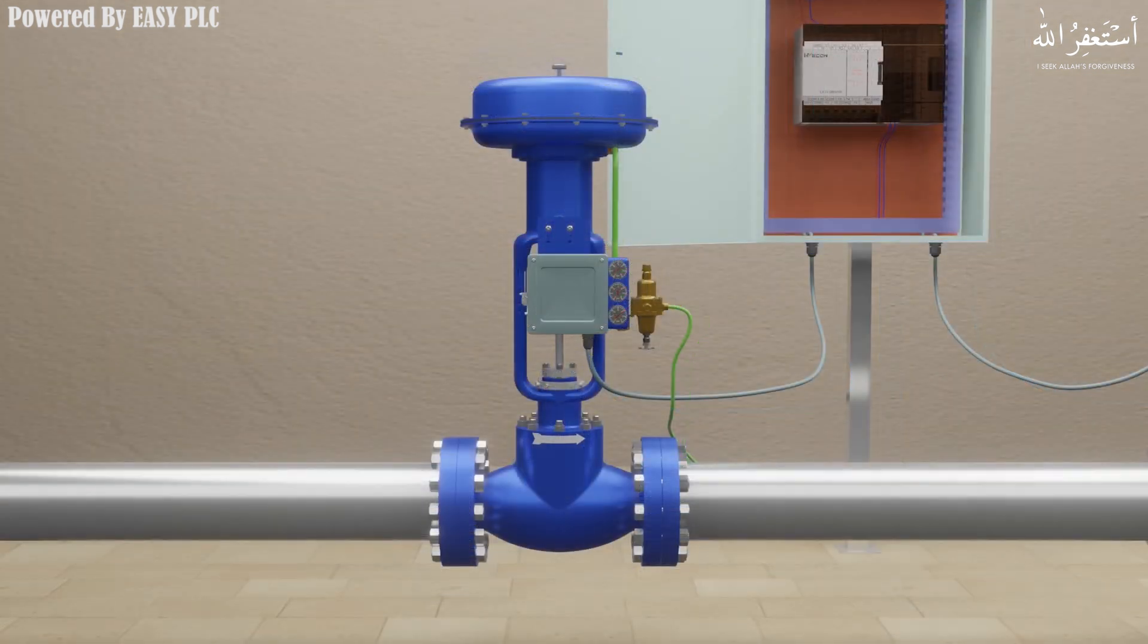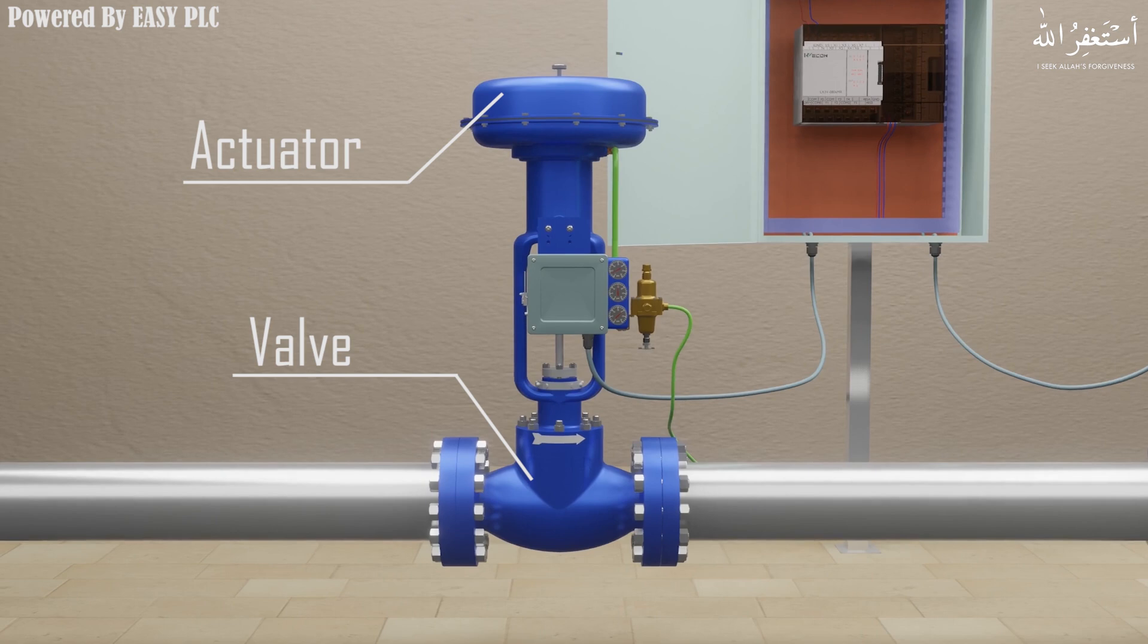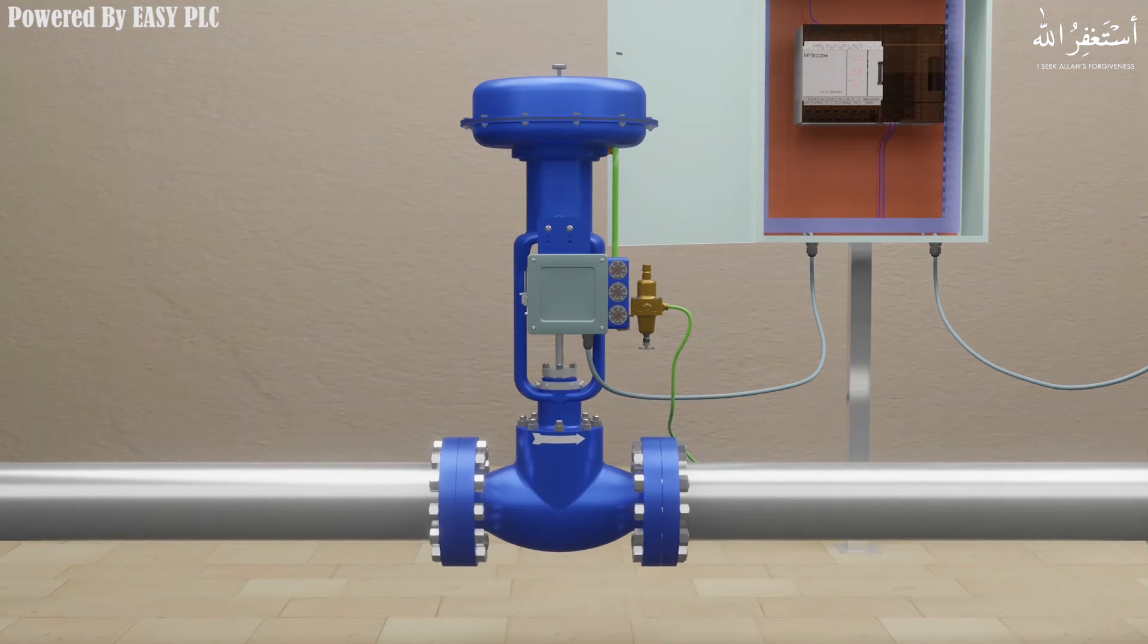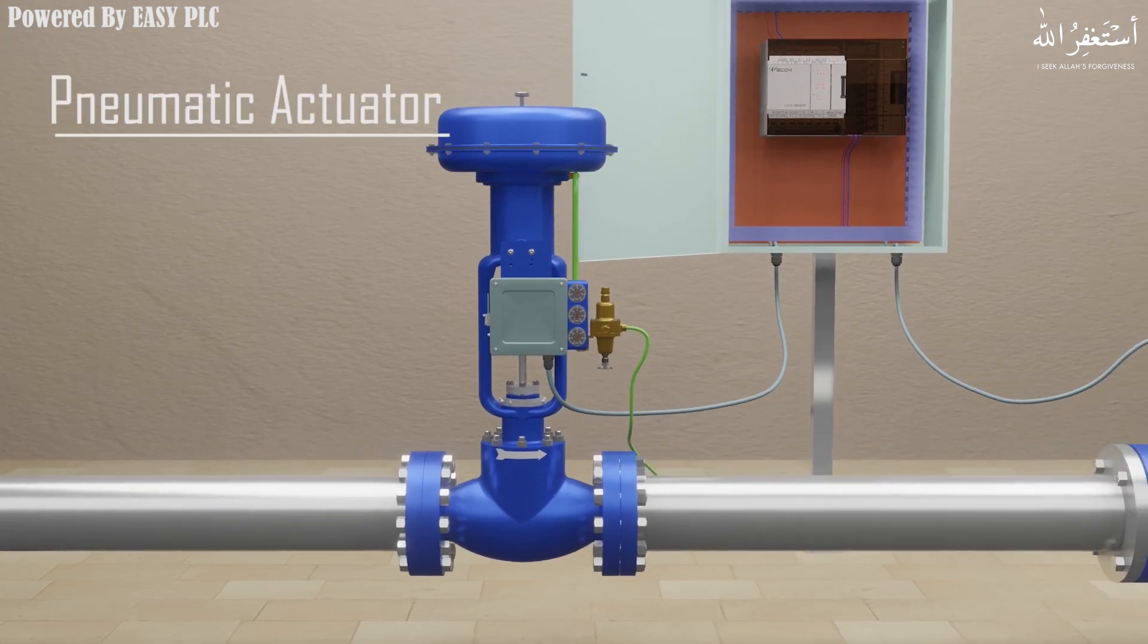A control valve has two separate components: the valve and the actuator. The actuator is the device connected to the valve through the valve stem that provides the force required to move the valve. The actuator can be controlled electrically, pneumatically, or hydraulically. The most common and the most reliable is the pneumatic actuator.